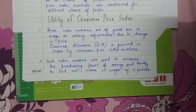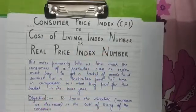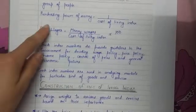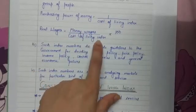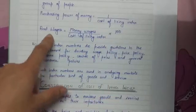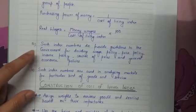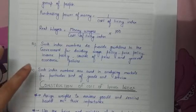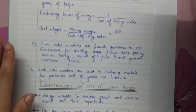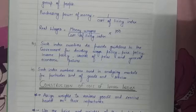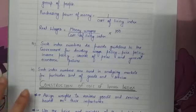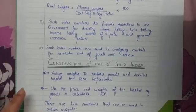To find what the real income or real wages of the consumer is, we calculate the CPI. The formula for the purchasing power of money is one divided by the cost of living index. The formula for real wages is: monetary wages divided by the cost of living index, multiplied by 100. Such index numbers provide guidelines to the government for deciding wage policy, price policy, income policy, control of prices, and general economic policy, and are also used in analyzing the market for particular goods and services.